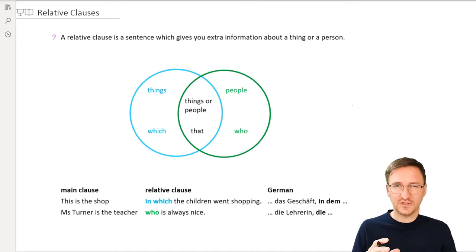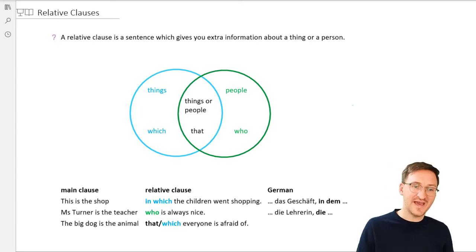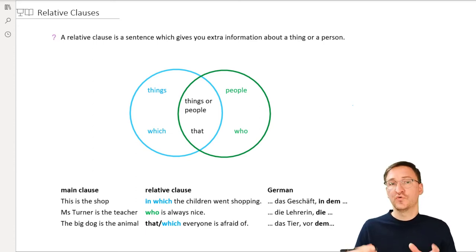Now, let's take a look at two examples that show us how that can be used. The big dog is the animal that or which. Both is fine. Everyone is afraid of. Der Hund or das Tier vor dem jeder Angst hat. It doesn't really make a difference here if you use that or which. If you want to use which, that's the thing that clearly shows what you're up to. That it's a thing you're talking about. Animals are things, not persons. Keep that in mind.